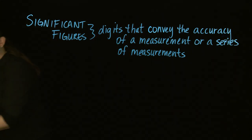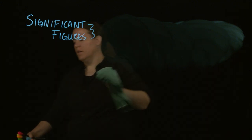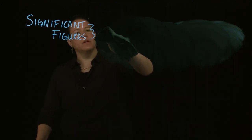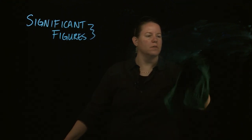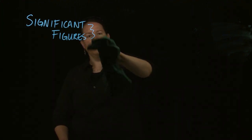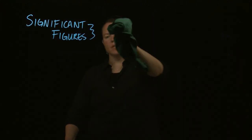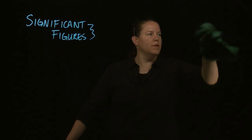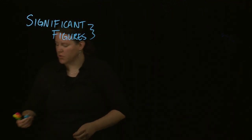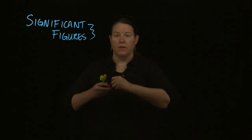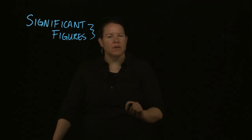So let's talk about significant figures — how we find them, and then how we do mathematical operations with them once we have the measurements we want to use. How do we find the number of significant figures in a measurement? Usually your book breaks this down into multiple rules; I'm going to break it down into two. I'll just abbreviate and say 'sig figs.'